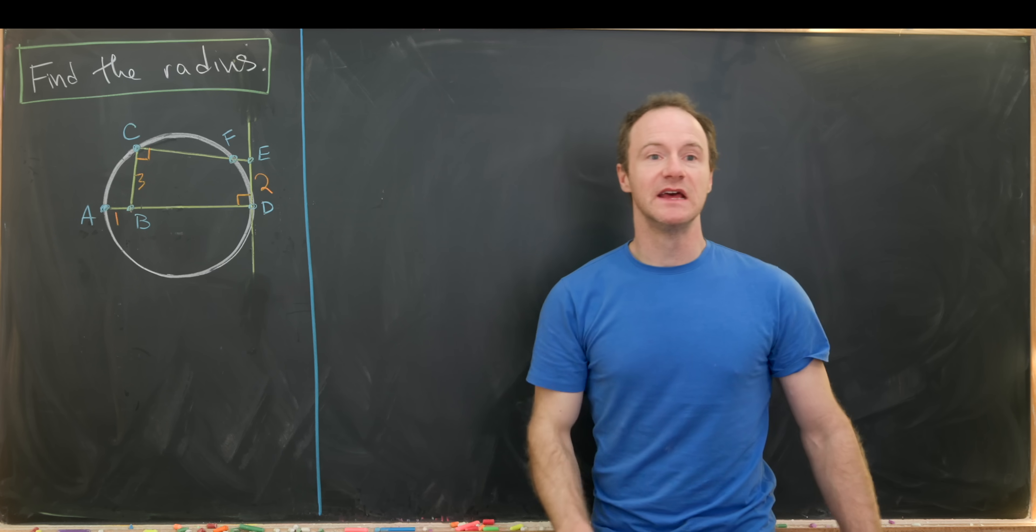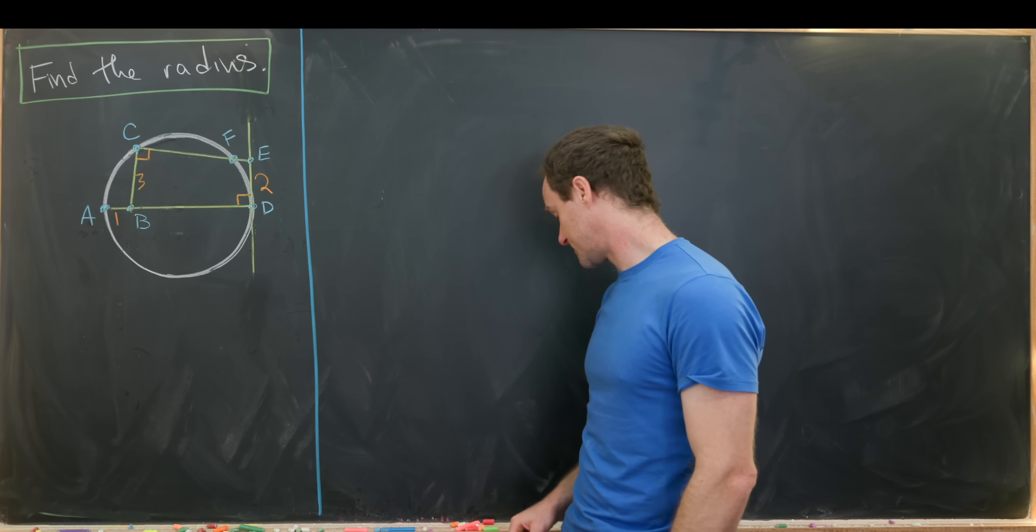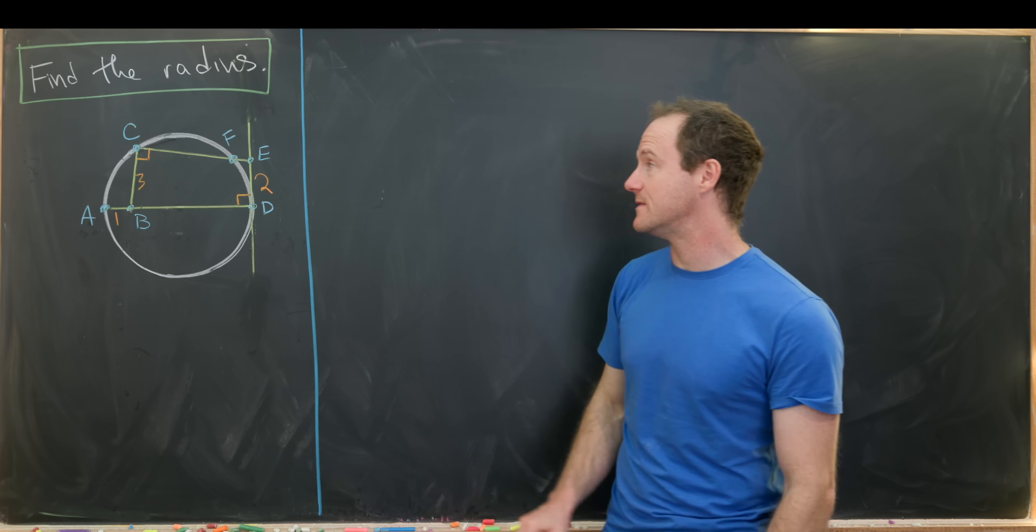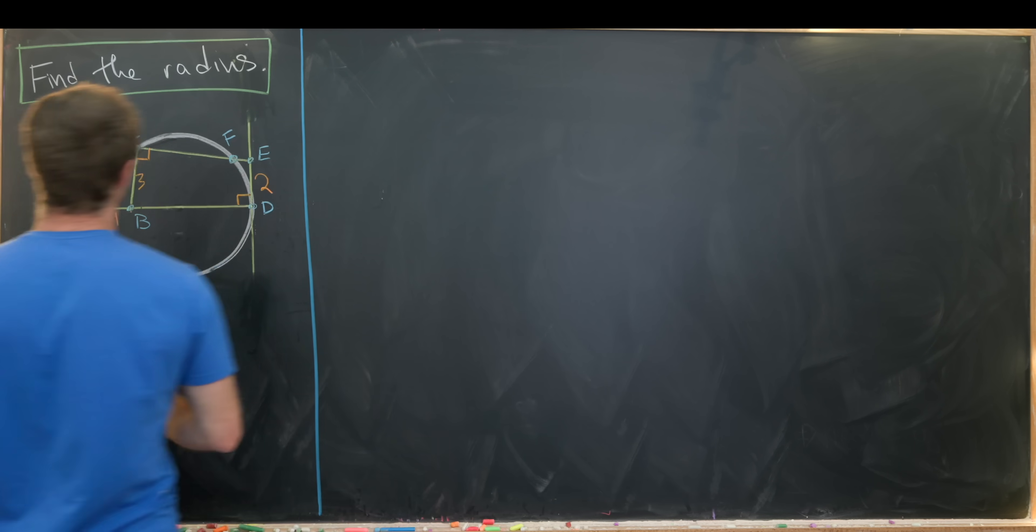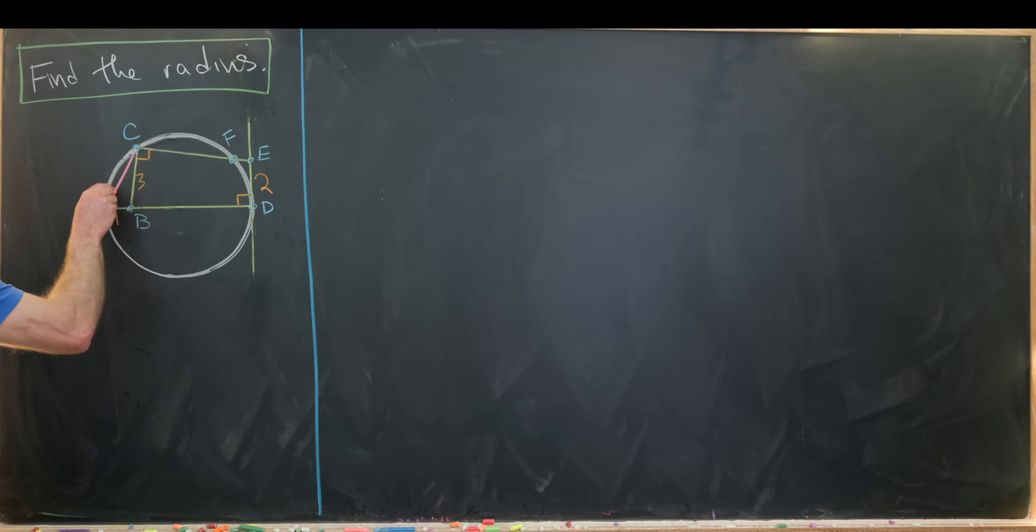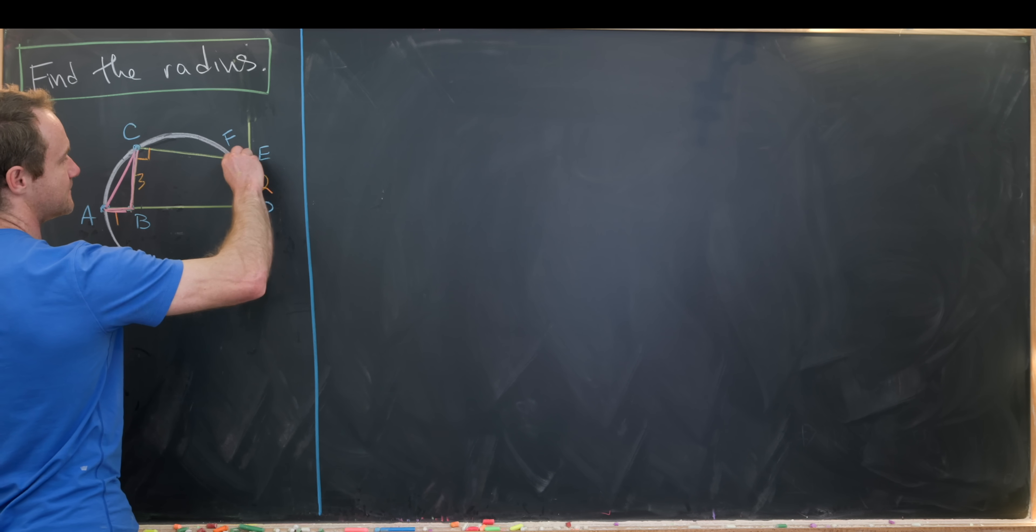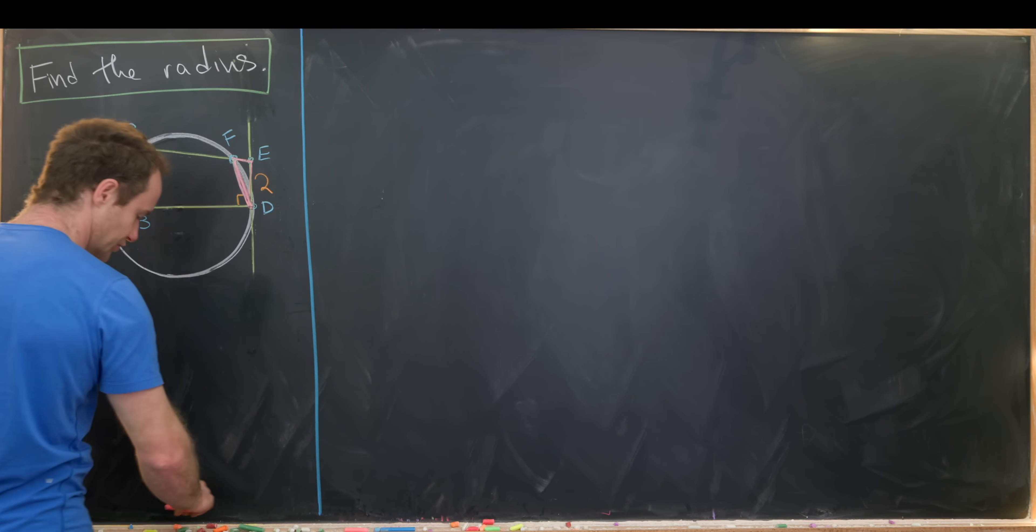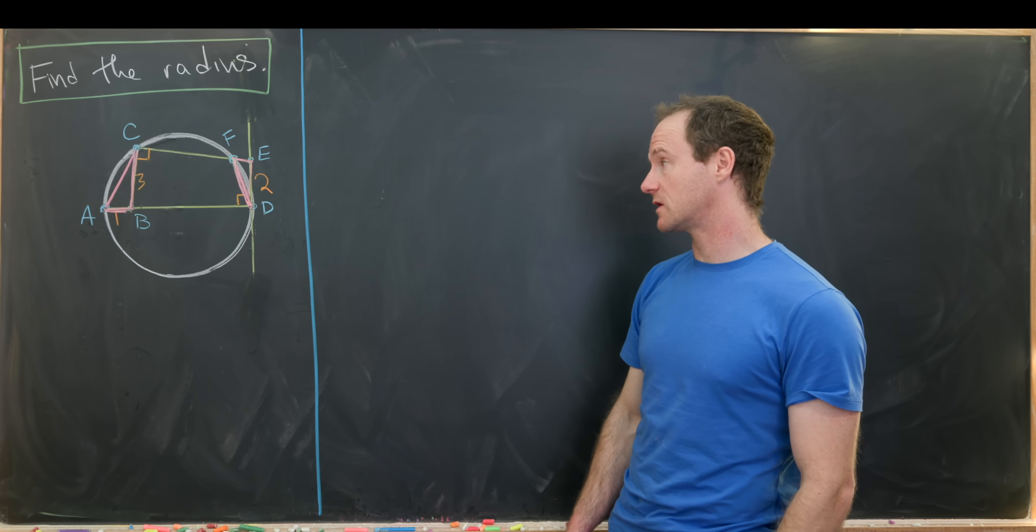And then next up, I'll create some triangles out of these points. And so that'll be triangle ABC and triangle DEF. So let's draw those in here. So we've got triangle A, B, C. So notice that shares this yellow line. And then triangle DE and then F. So there are my two triangles.